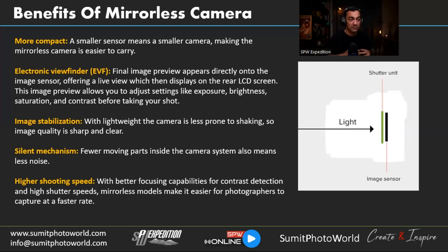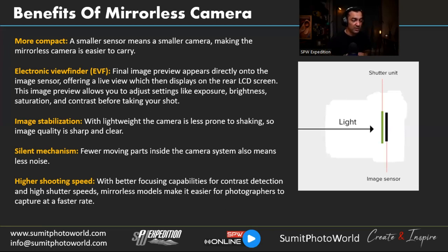Higher shooting speed is another benefit. With better focusing capabilities using contrast detection and high shutter speed, mirrorless models make it easier for photographers to capture images at a faster rate. The burst mode capability — shooting many images in rapid succession — is really improved in mirrorless cameras.